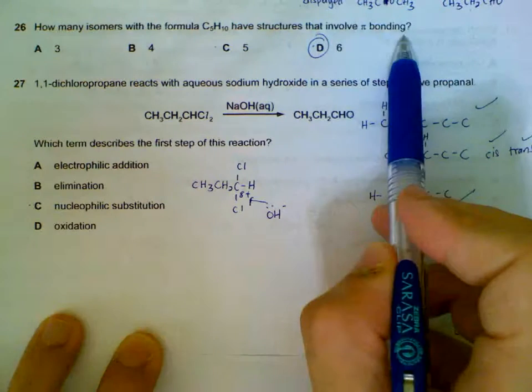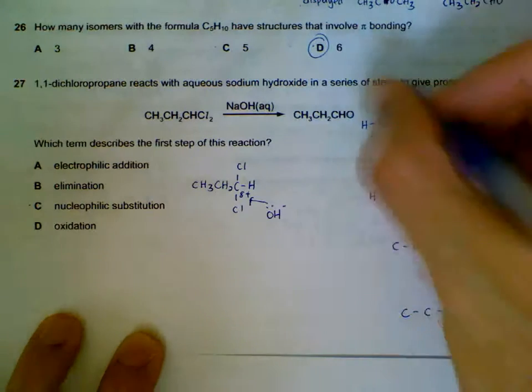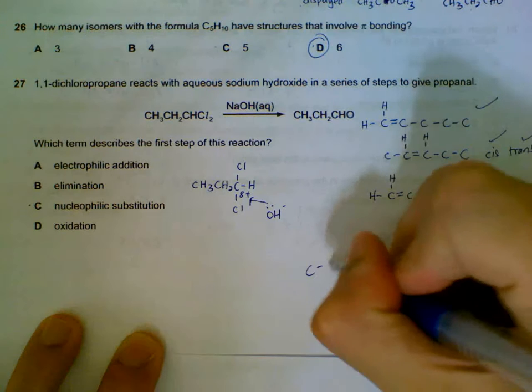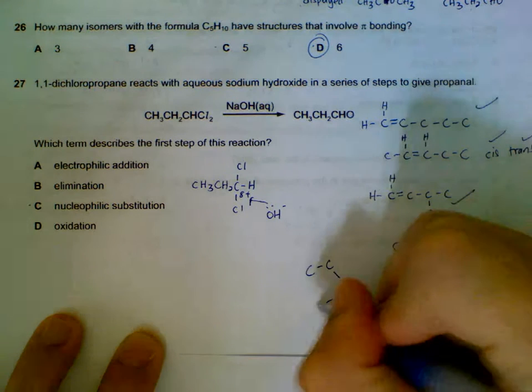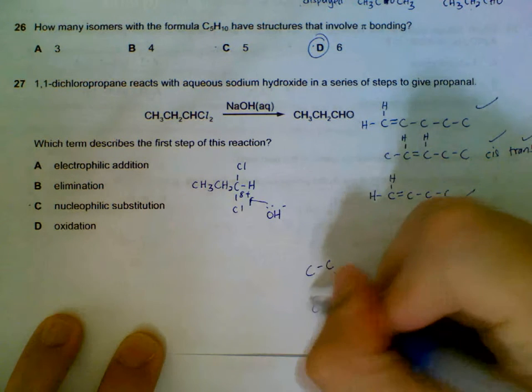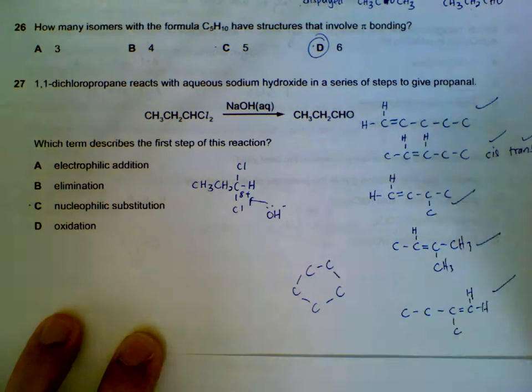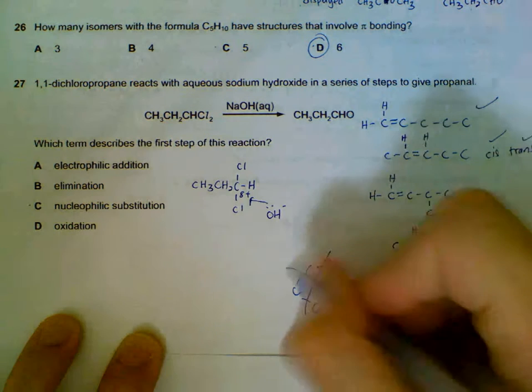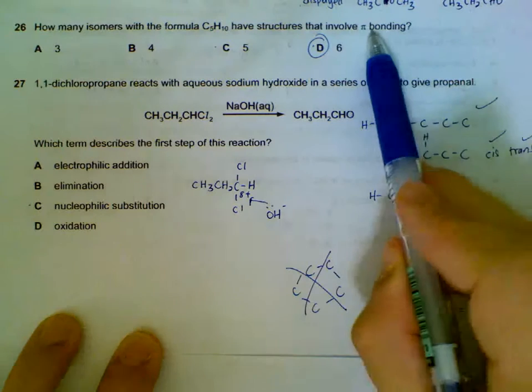Why do they say involve pi bonding? Because they don't want you to include the molecule that is joined in a ring. This will be C5H10 with no double bonds. But this is not part of the ones we should count.